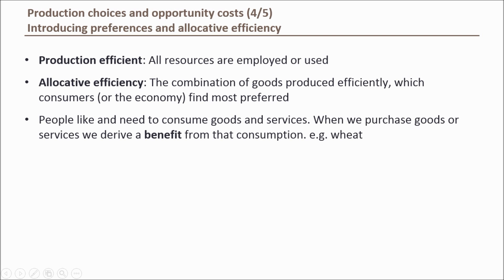Generally speaking, consumers like to consume, and the more we consume the larger the satisfaction. When we buy and eat food we derive a benefit from that consumption. The same applies when we purchase goods like cars or computers, or even services like a haircut or pest control. So we can safely assume that consumers in our simple economy will derive a benefit from producing and purchasing power lines and wheat.